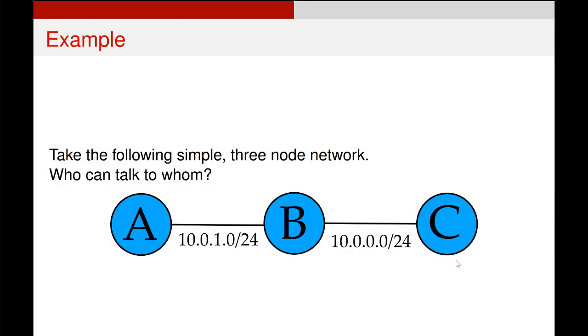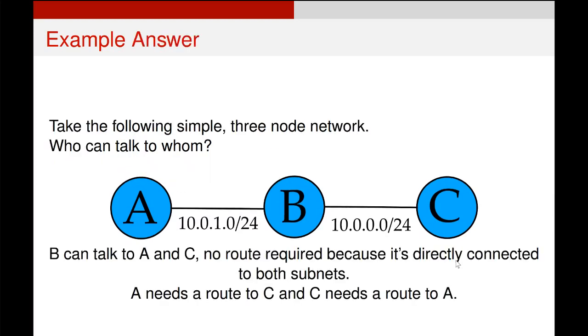Why not? Because A needs to know, we need to tell A that in order to talk to C, it has to go via B. And this is the process of routing, advising machines where to send their traffic so it can ultimately end up in the right state.